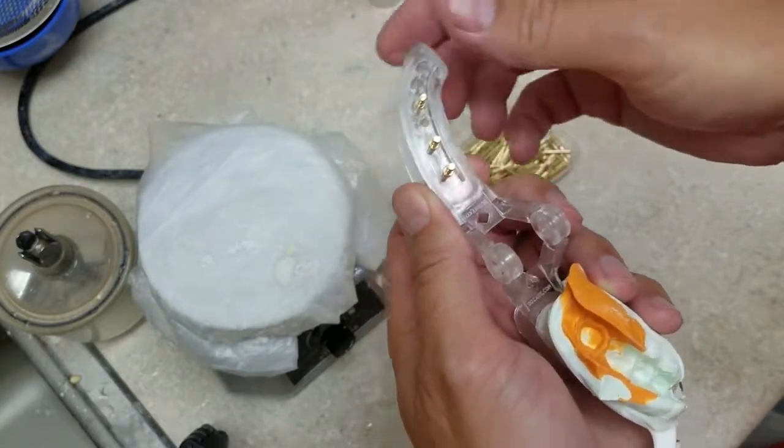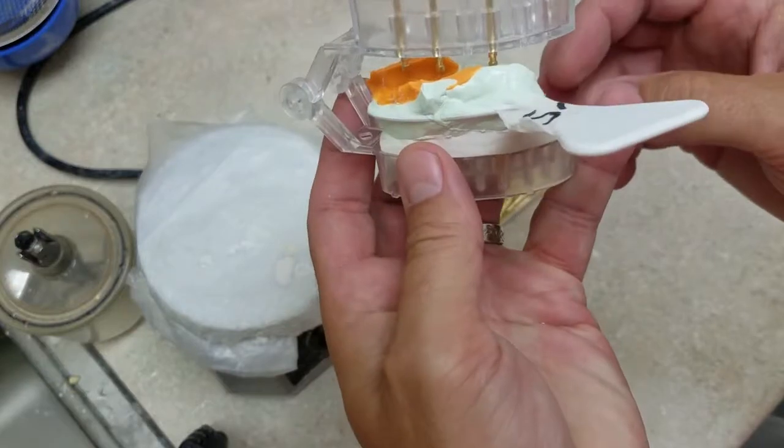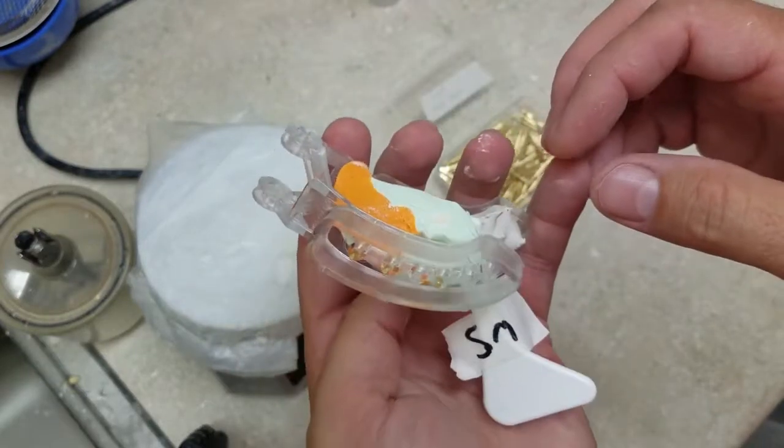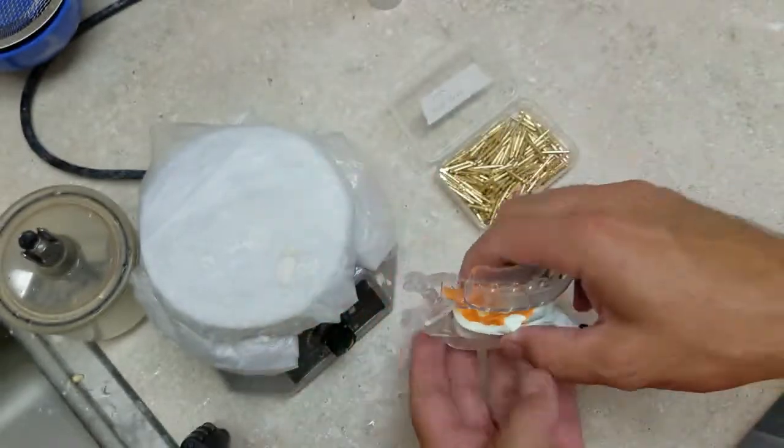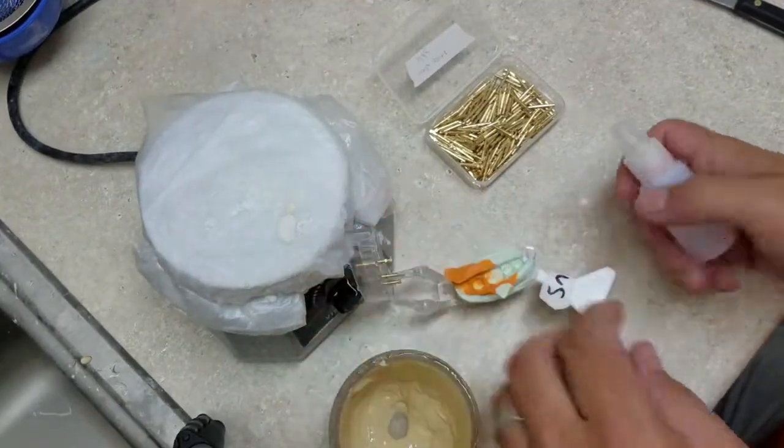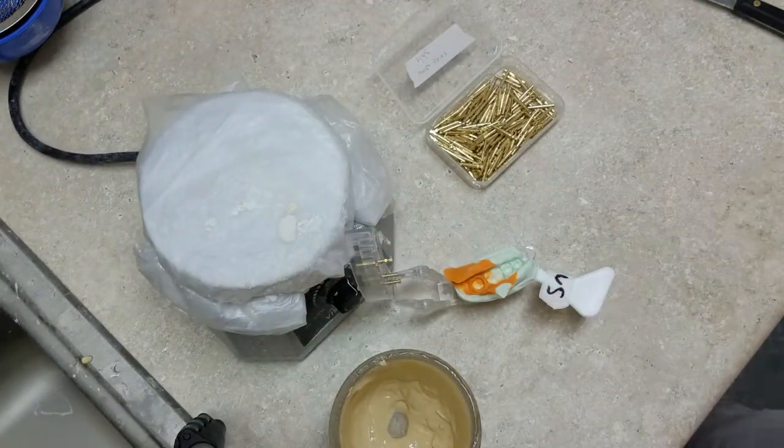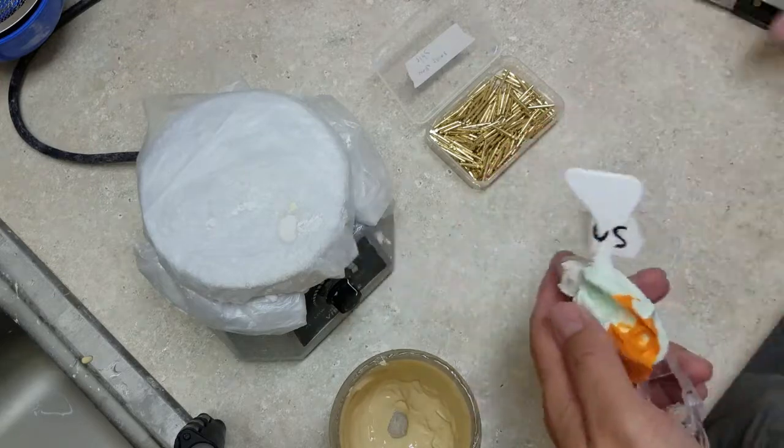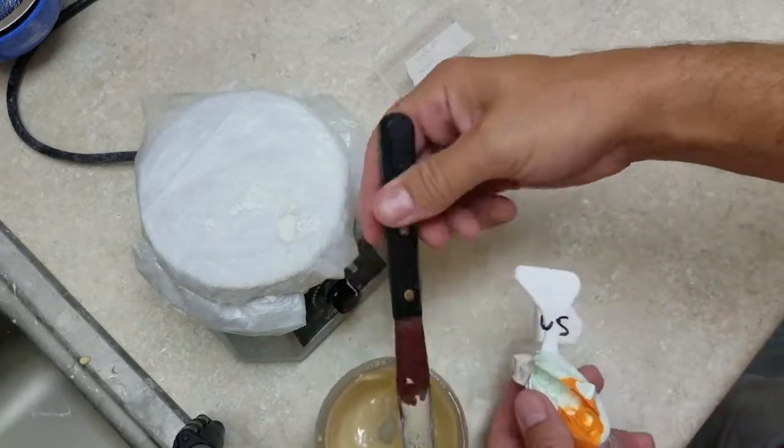Not too hard and not too soft. Then you pour it. You've got your impression. I gave a little spritz of surfactant or water just to moisten up the impression.